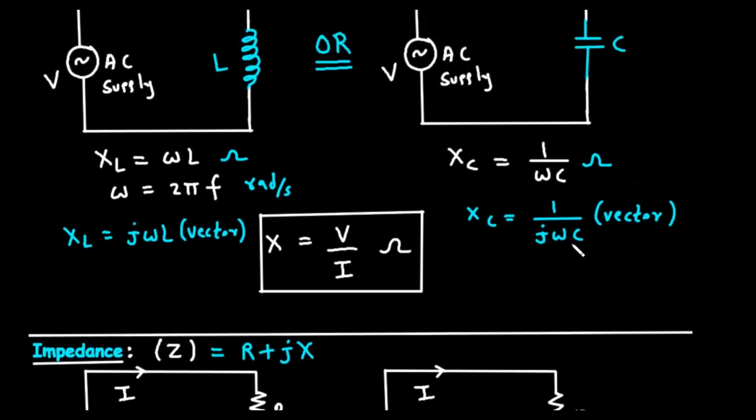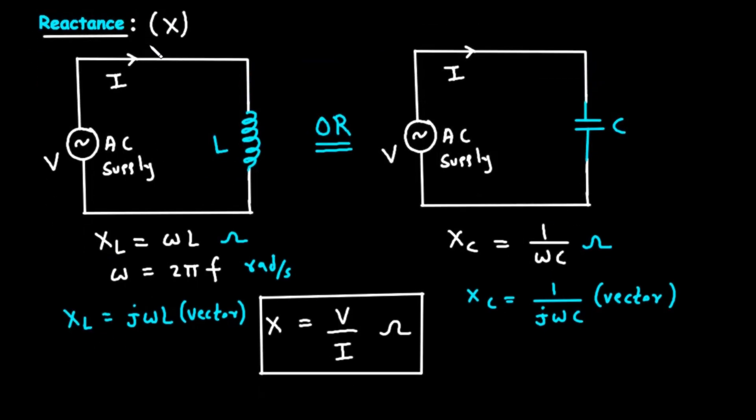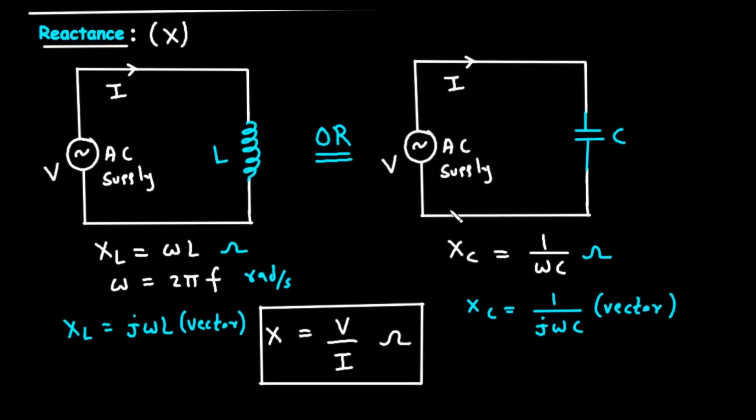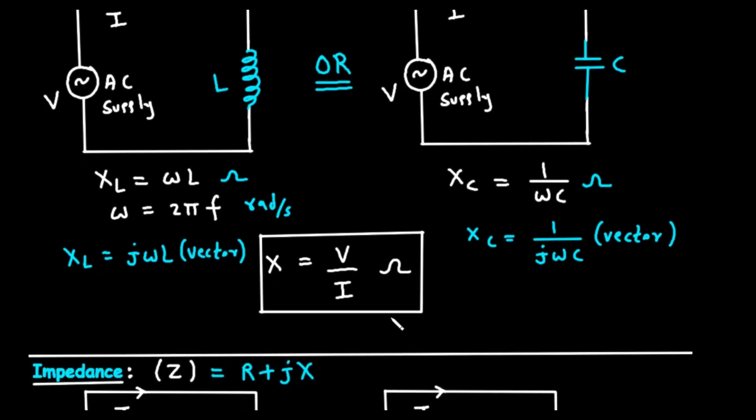So, to summarize reactance, it's the frequency-dependent opposition from inductors and capacitors. The general formula for reactance is X equals V divided by I, where V and I are considered as vectors, or phasors, to account for the phase shifts.